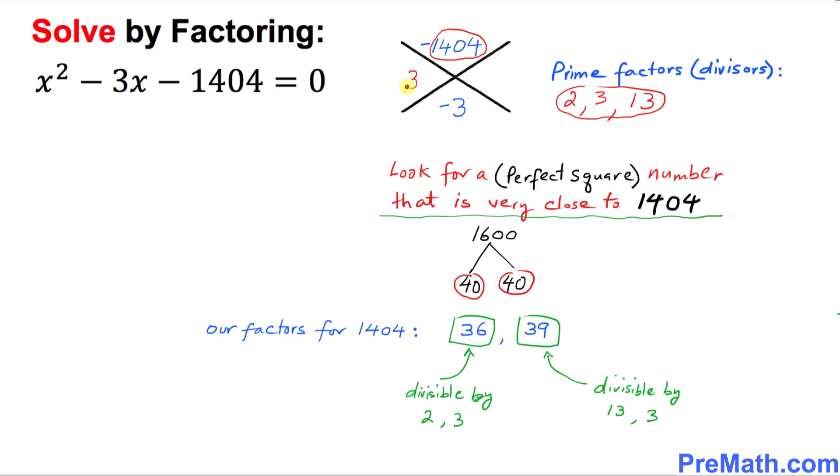I'm going to write down our possible factors right up here: 36 and 39. The only thing is we need to fix the signs. We know that 39 has a negative sign and 36 has a positive sign. These are our two factors.